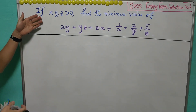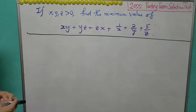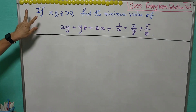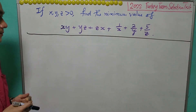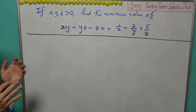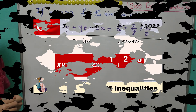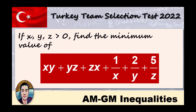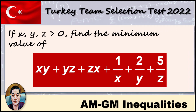For today's lesson, we'll solve this inequality question from the 2022 Turkey theme selection test. If X, Y, Z are positive, we'll find the minimum value for this expression. We're going to use two different methods to solve this problem. Pause the video now if you wish to solve it.